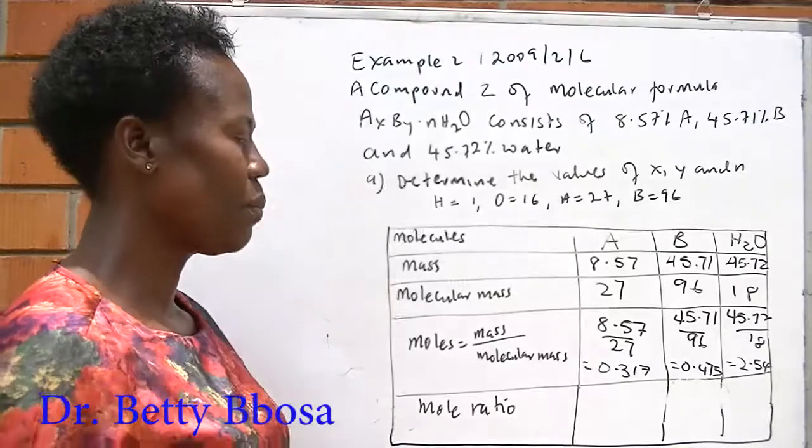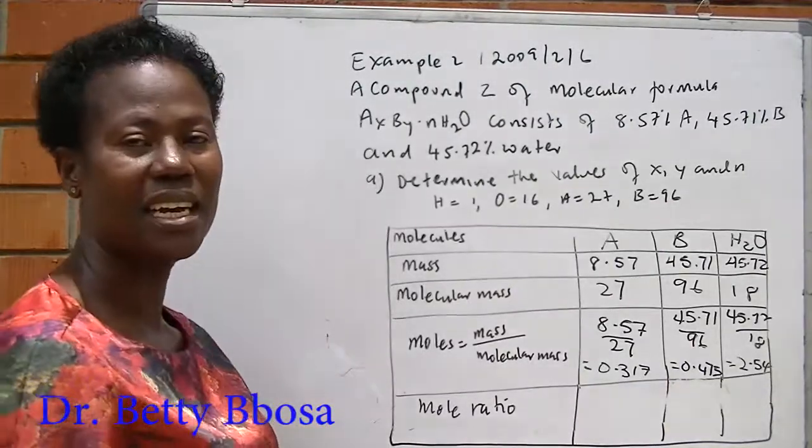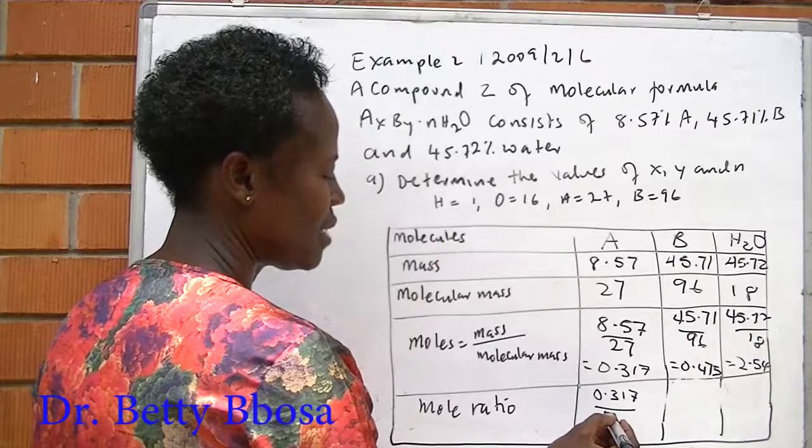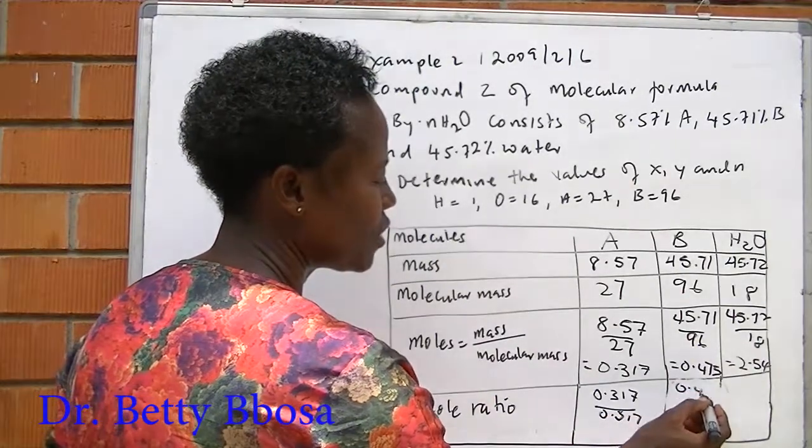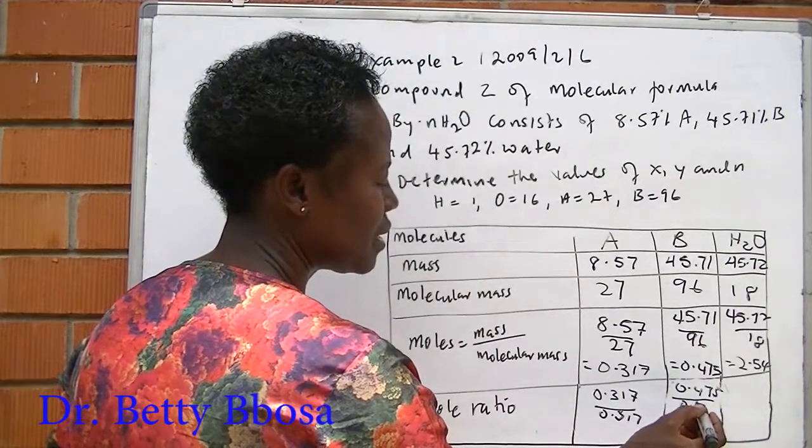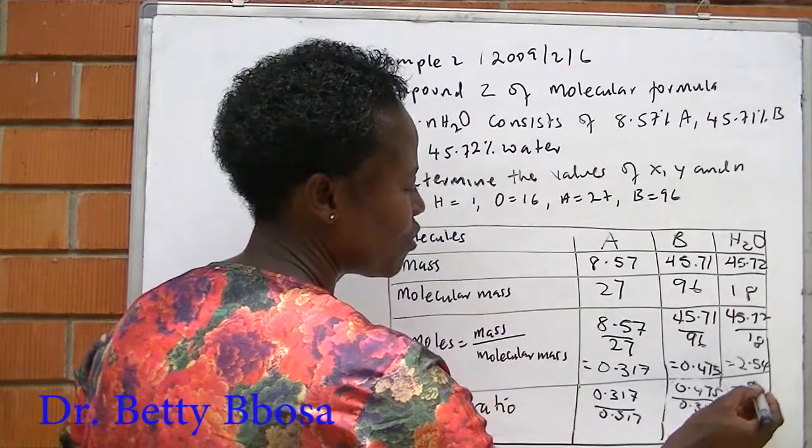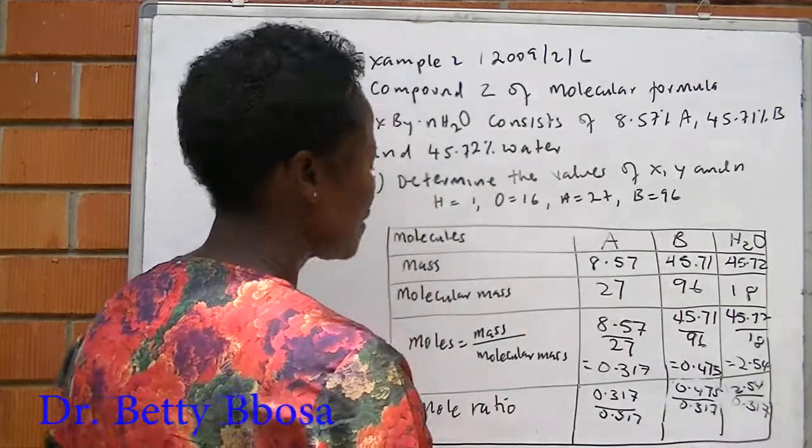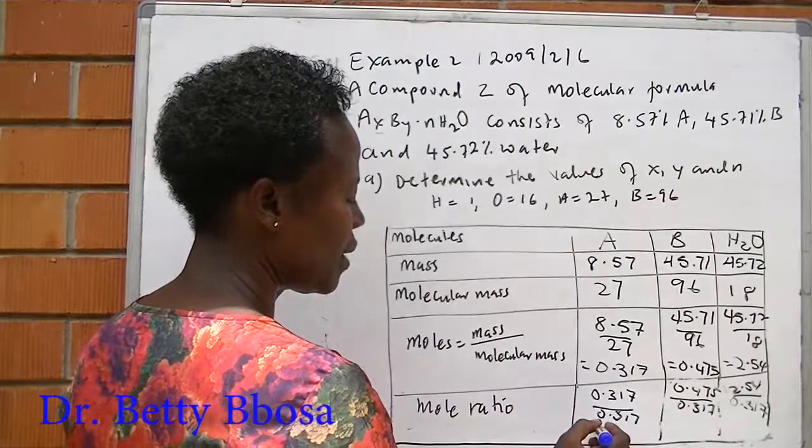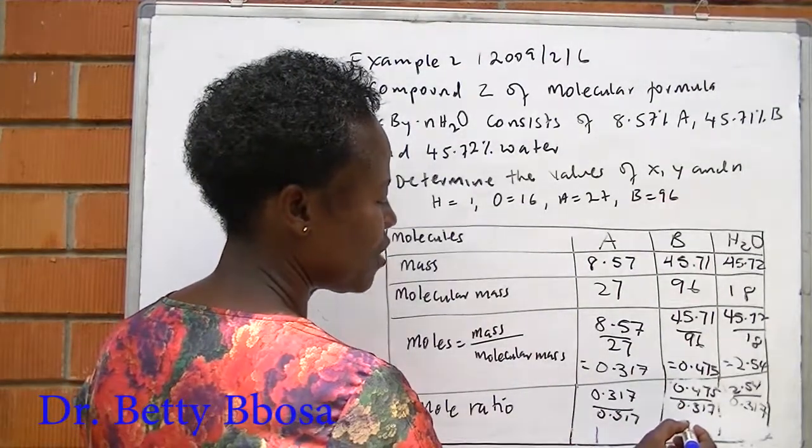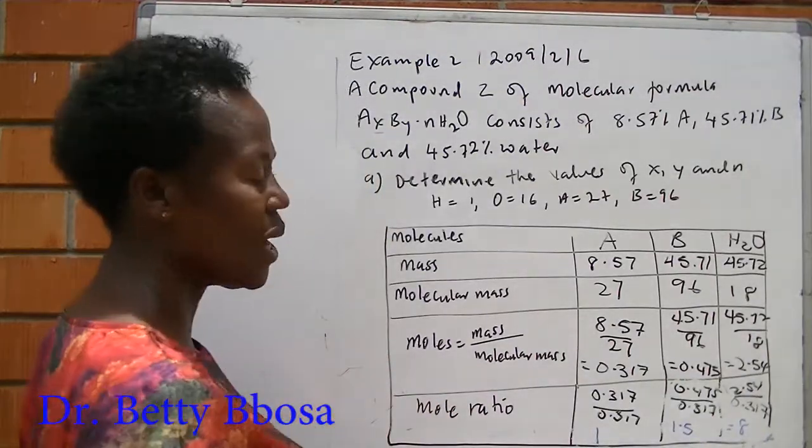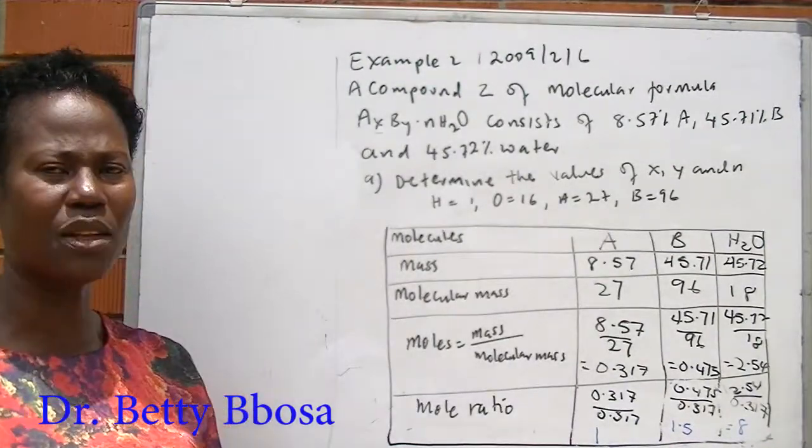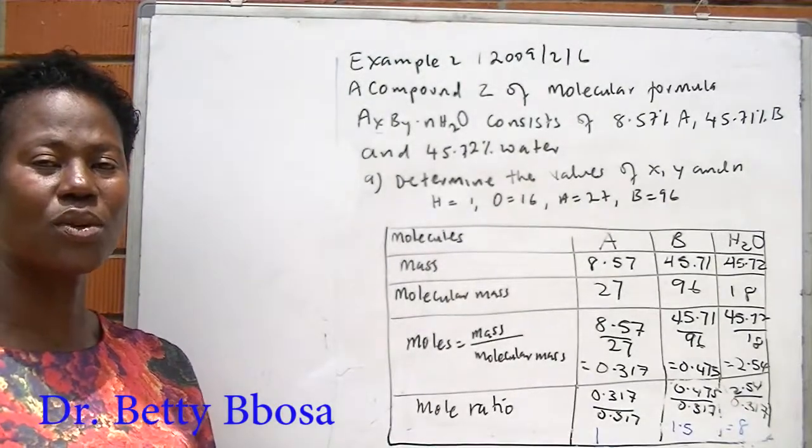Having gotten the moles, we pick out the smallest. 0.317 is the smallest. We divide it throughout. So this is 0.317 over 0.317, 0.475 over 0.317, and 2.54 over 0.317. This equals 1, this one equals 1.5, and this one equals 8. So when you get the mole ratio, when it is 1.5 or 2.5, provided there is 0.5 in one of the ratios, you multiply by 2 to get rid of 0.5.